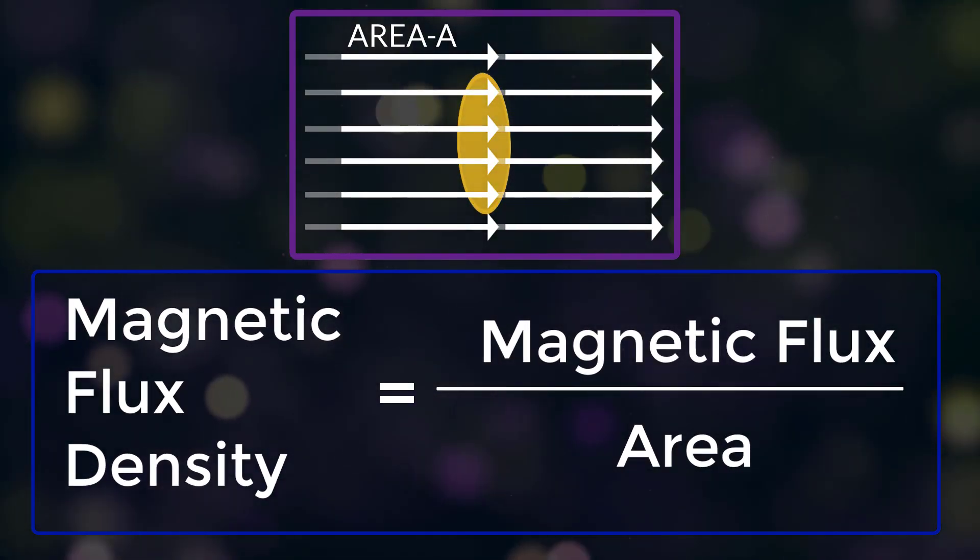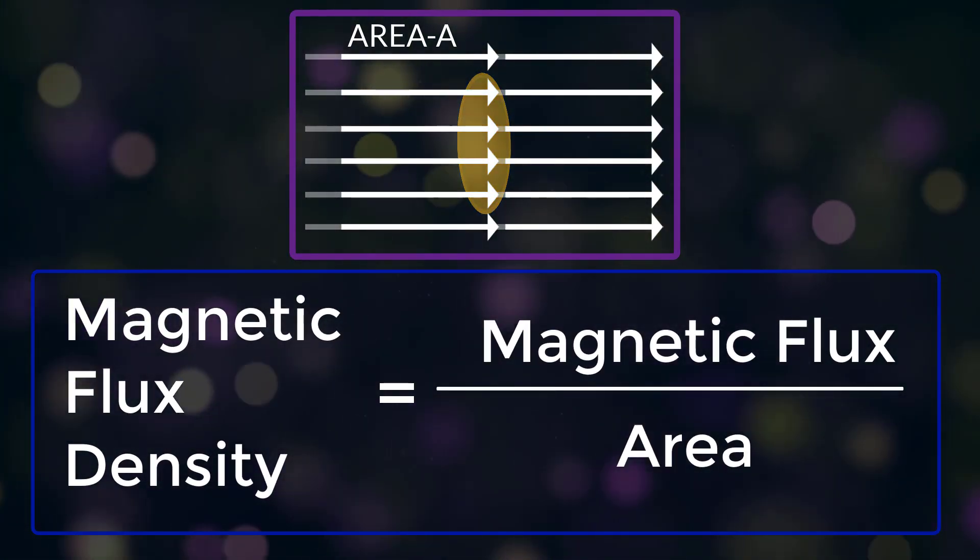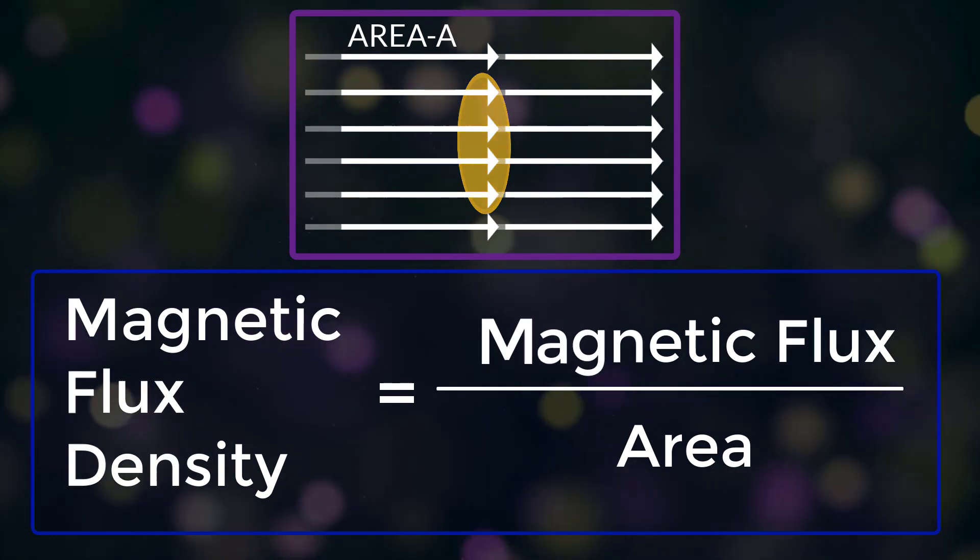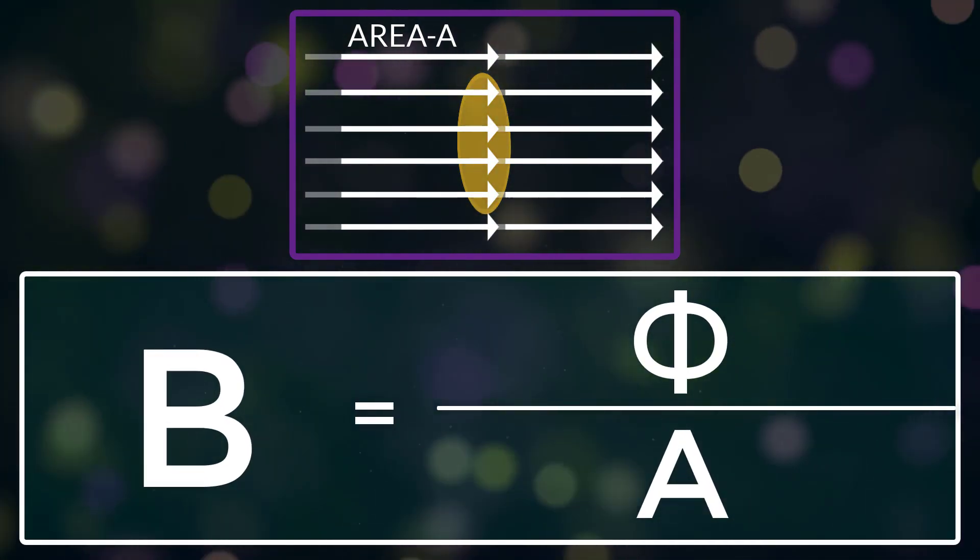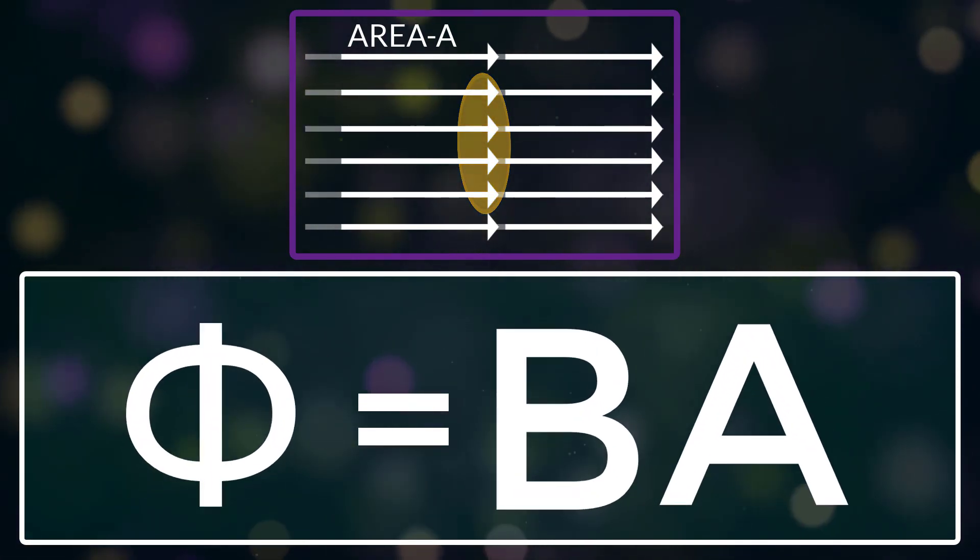So magnetic flux density is equal to magnetic flux divided by area. B equals phi by A. Phi equals BA.